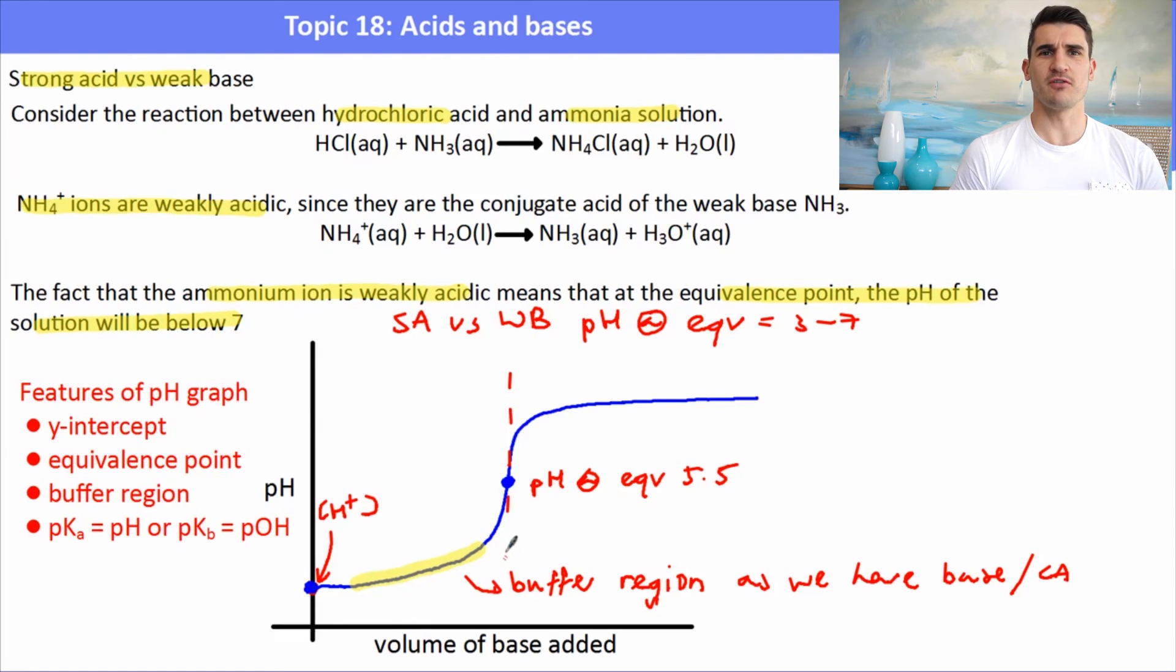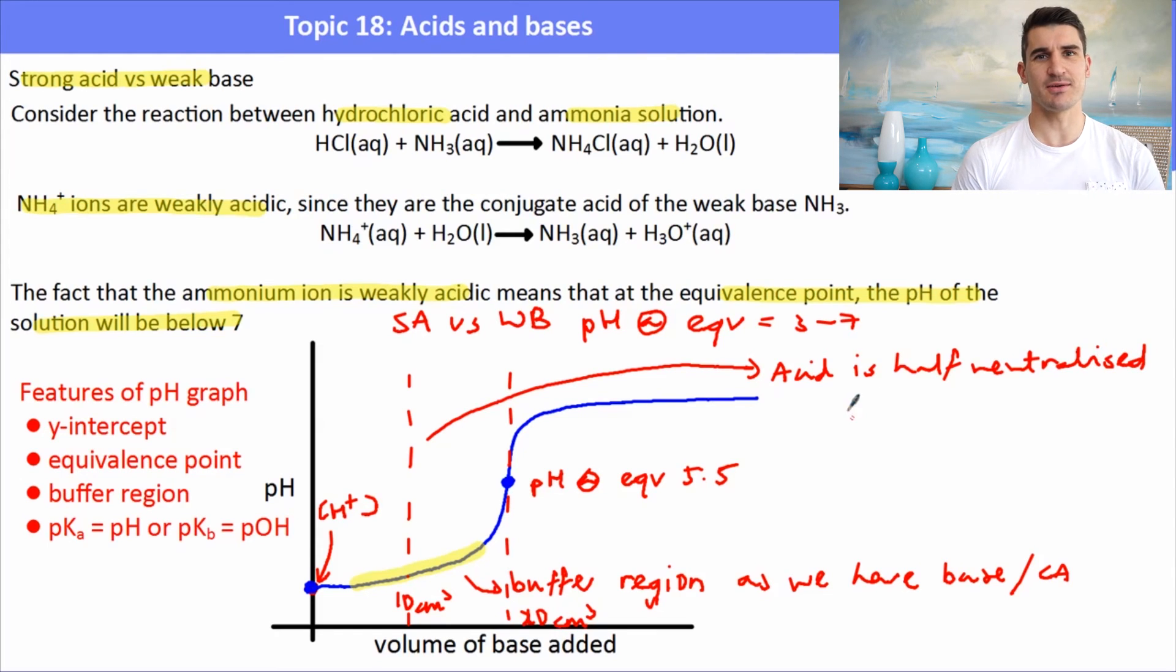We could work out how much volume of base was needed to neutralize the acid by looking at the inflection point and working out the volume. At half of that volume, at say 10 centimeters cubed, we have what's known as the half equivalence point. That's when exactly half of the acid has been neutralized by the base, so it's a half neutralized reaction. In this buffer region, this part of the buffer region, this is where we have the pH which is equal to the pKa. So that is a section of the graph that they ask you to know. If you are asked to calculate the pH at the half neutralization point, it's the pKa of the weak acid.